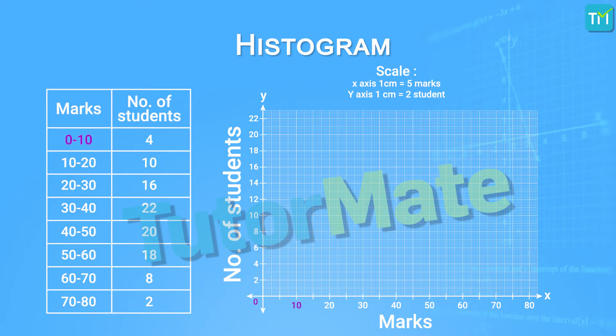We'll begin with the first class, which is 0 to 10. Now the frequency for this class is 4, which means there are 4 students who have scored marks from 0 to 10. We'll draw a rectangle having its height as 4 with respect to the y-axis, and its base will be 2 centimeter interval between 0 and 10 corresponding to the class 0 to 10.